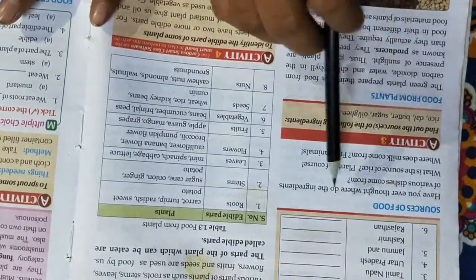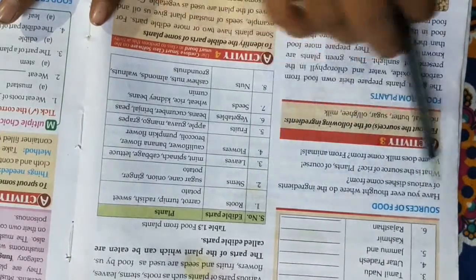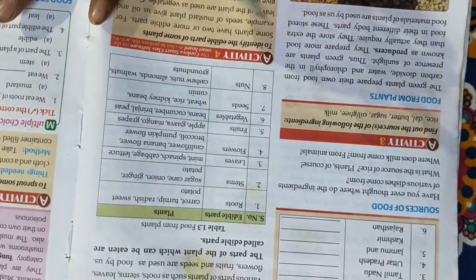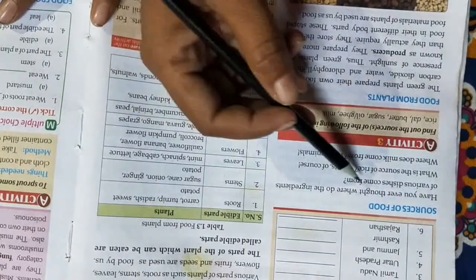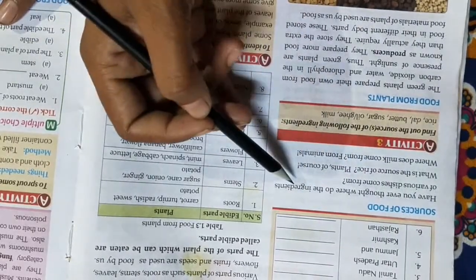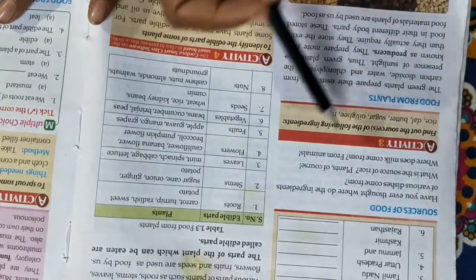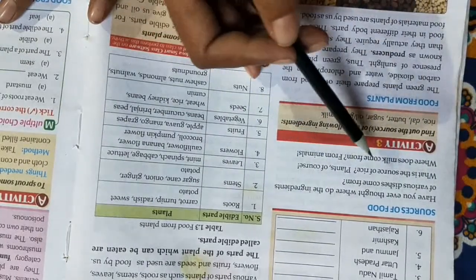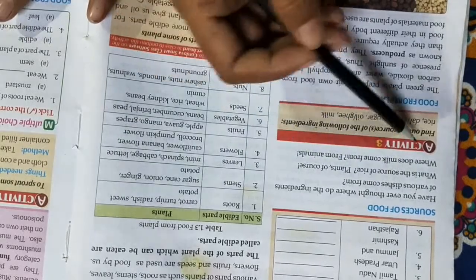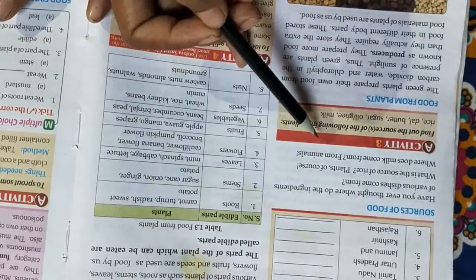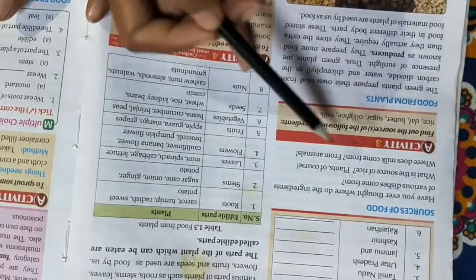Have you ever thought where do the ingredients of various dishes come from? What is the source of rice? Plants, of course. Where does milk come from? From animals.